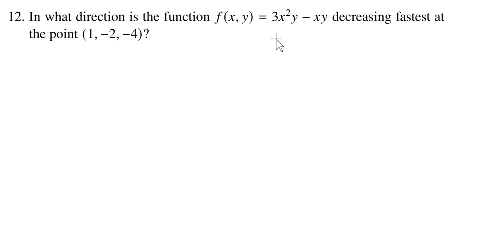But the real question is, at this point when the input is (1, negative 2), in which direction is this function decreasing the fastest? And the way we go about solving this is by going back and asking, how do we find the slope or the rate of change in any direction? And the answer is, of course, we take the directional derivative.